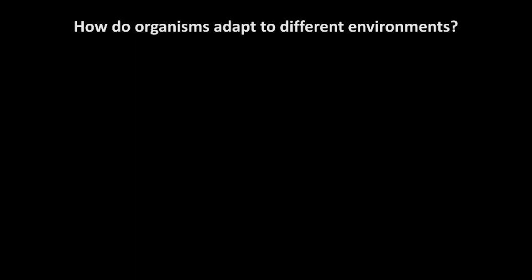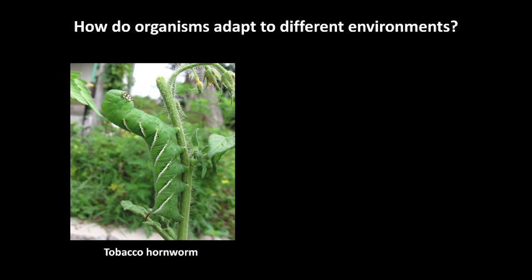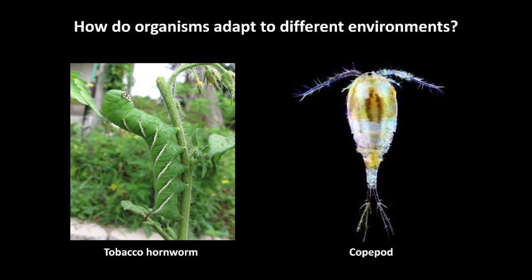So first, just a quick introduction to my research. I study how organisms adapt to changes in their environment and specifically what genetic changes underlie these adaptations. The two organisms that I focus on are the tobacco hornworm caterpillar, which is an insect crop pest found natively in North Carolina, and the copepod, which is a tiny aquatic animal that's somewhat similar to a shrimp.